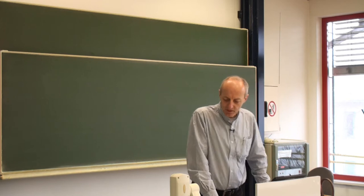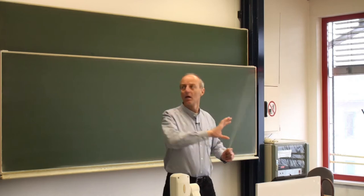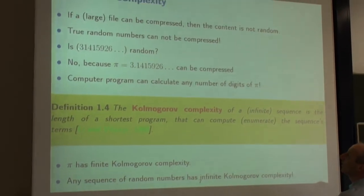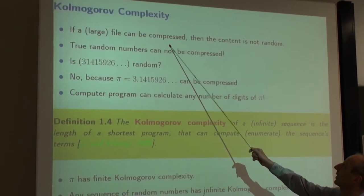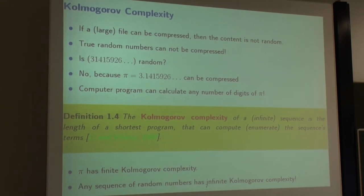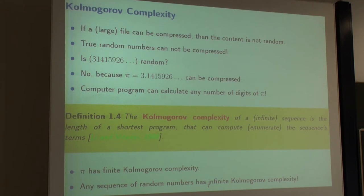Kolmogorov complexity helps us understand what randomness means, and randomness is correlated to compression. If a file can be compressed, then the content is not random, because you can only compress files with an inherent structure. If there is no structure — and that basically means randomness — then there is no information there which you can compress.